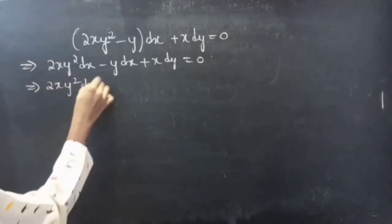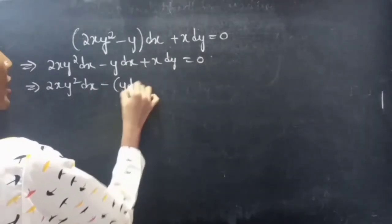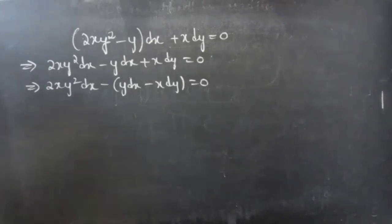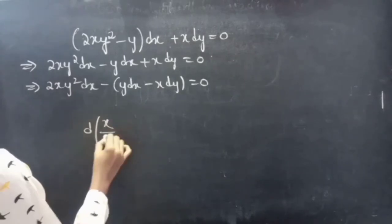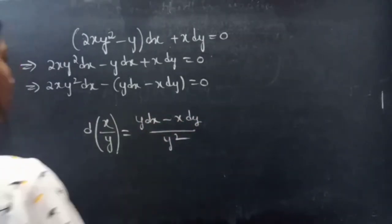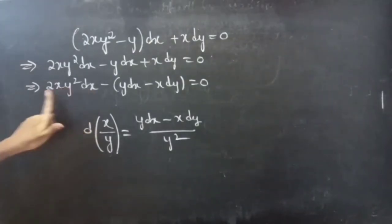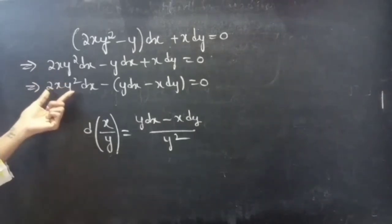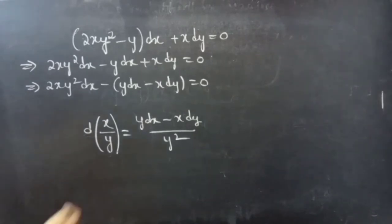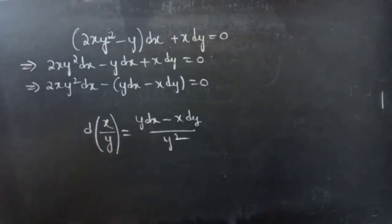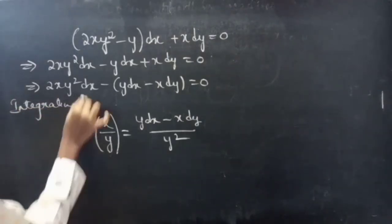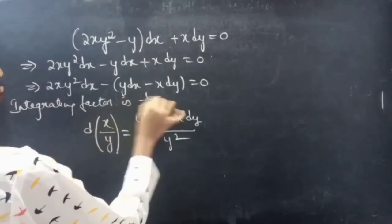We can rewrite this grouping the terms as 2xy² dx − (y dx − x dy) = 0. We need to choose a suitable differential. We know that d(x/y) = (y dx − x dy) / y². If we can eliminate the y² it is easy to integrate, so we divide by y². The integrating factor is 1/y².